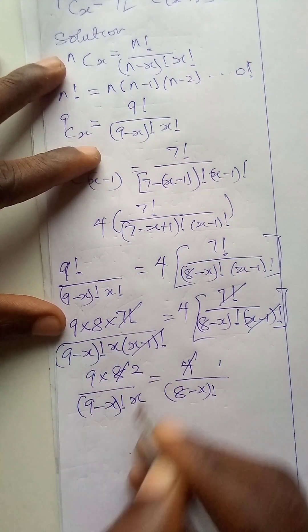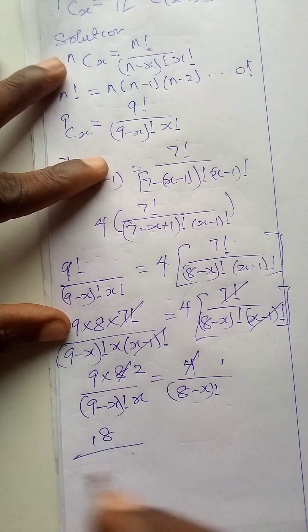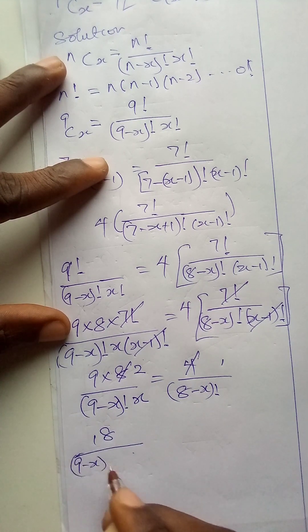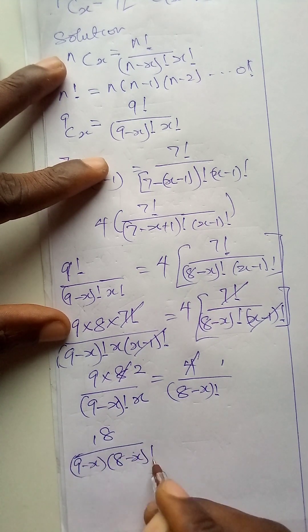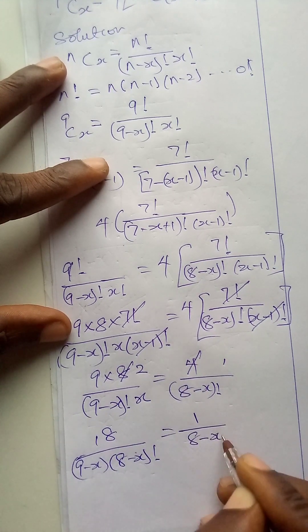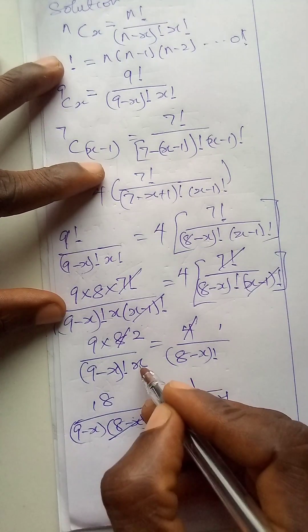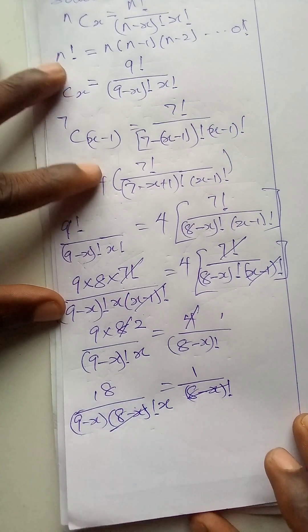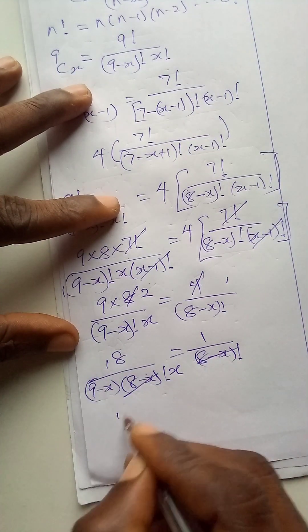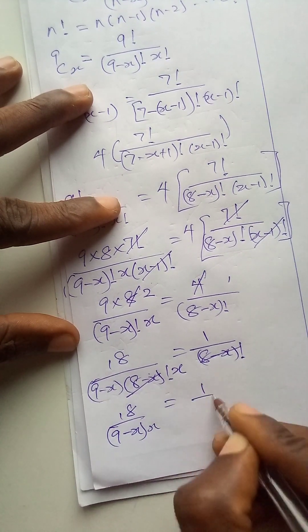4 into 8 gives 2, and 9 times 2 is 18. So 18 over 9 minus x factorial, when expanded, becomes 18 over 9 minus x times 8 minus x factorial, equal to 1 over 8 minus x factorial. The 8 minus x factorials cancel, leaving 18 over 9 minus x times x equal to 1.